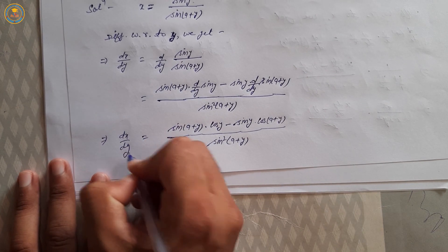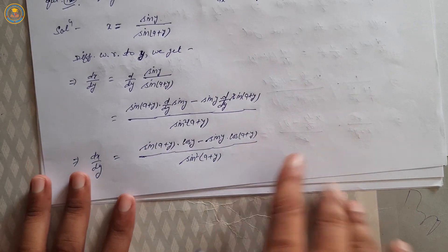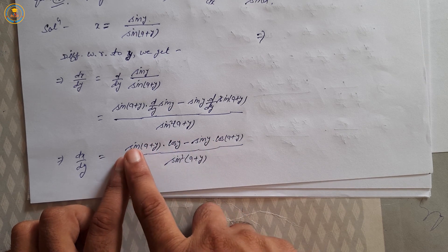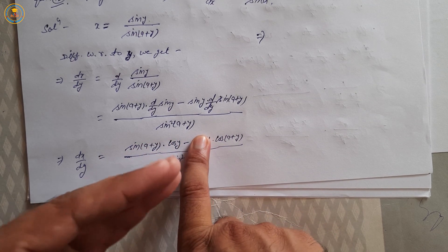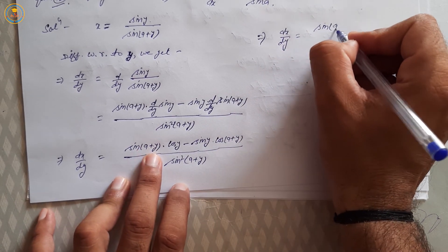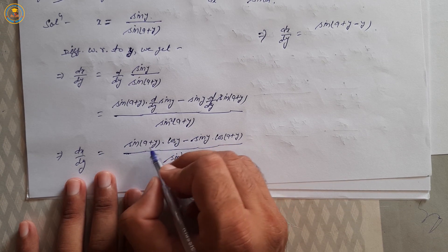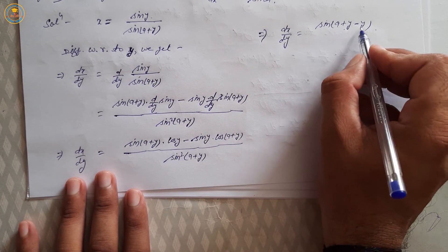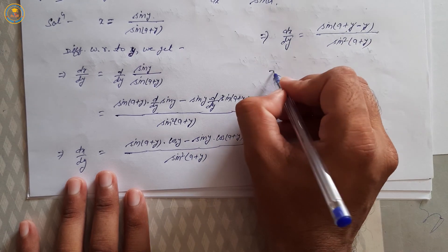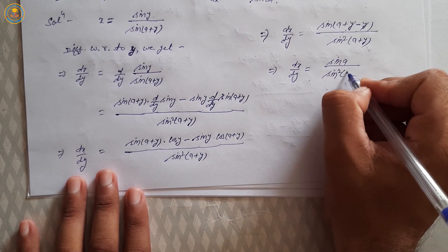Apply the formula: sin a into cos b minus cos a into sin b equals sin(a minus b). Here a equals (a plus y) and b equals y. So the numerator becomes sin((a plus y) minus y) equals sin a. Therefore dx upon dy equals sin a upon sin²(a plus y).